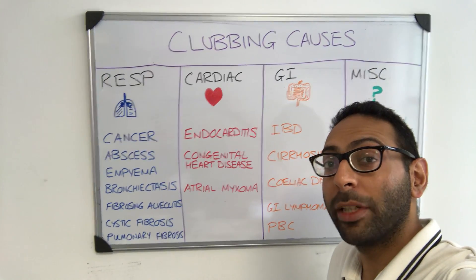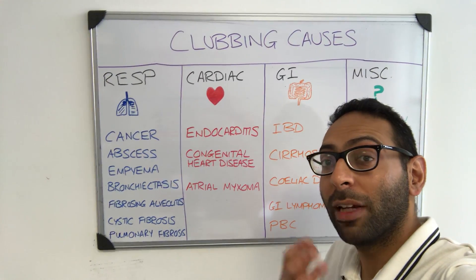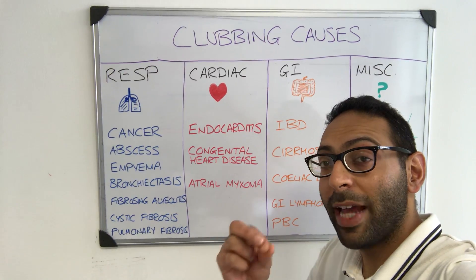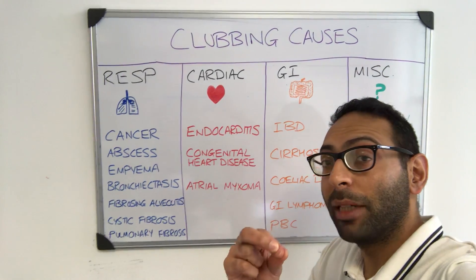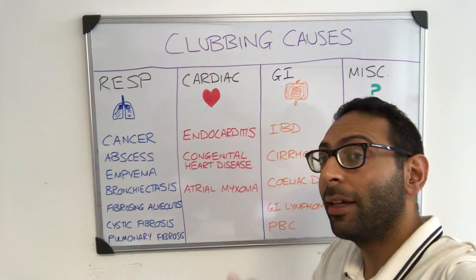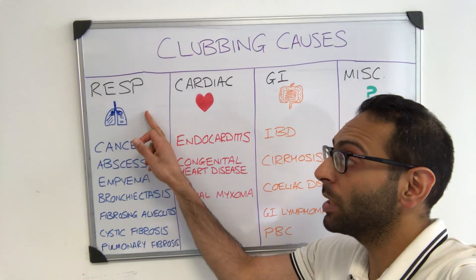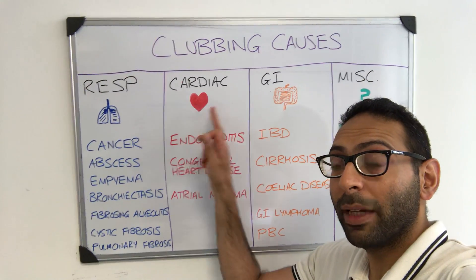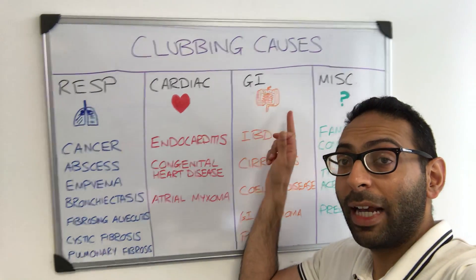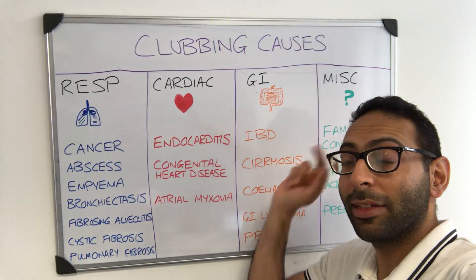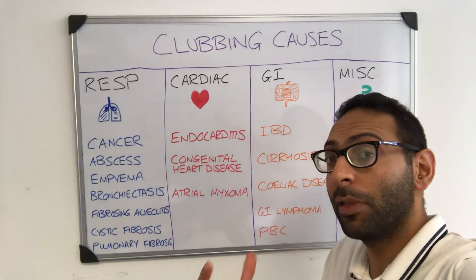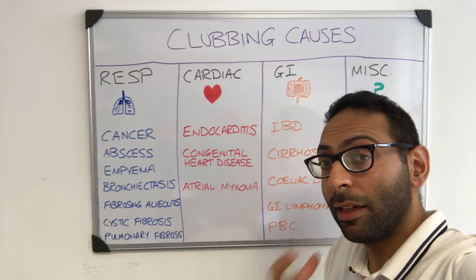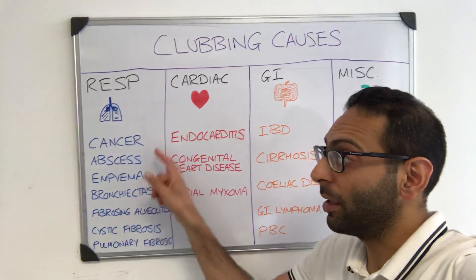Just in between webinars I had a quick question about causes of clubbing, so I thought I'd do a quick video for the causes of nail clubbing. Remember there are four main areas to think about: respiratory causes of clubbing, cardiac causes of clubbing, GI causes of clubbing, and miscellaneous causes of clubbing. If we start with respiratory, there's a really long list of things in the lung that can lead to nail clubbing.